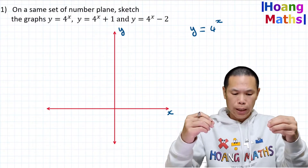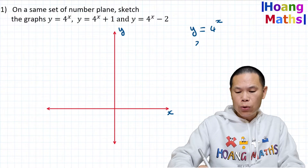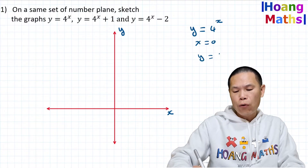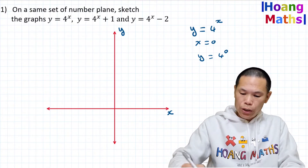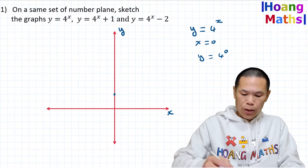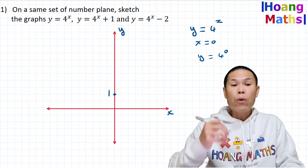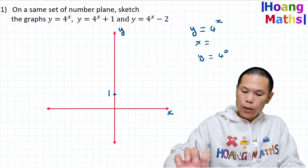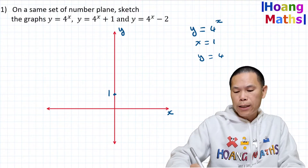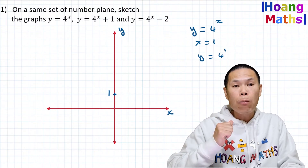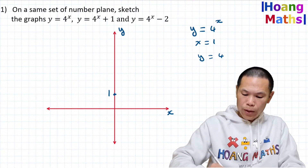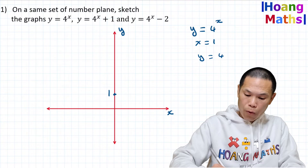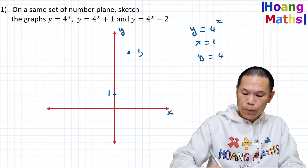When x = 0, y = 4^0. Any number to the power of zero is 1, so the point (0, 1) is here. When x = 1, y = 4^1 = 4, so the point (1, 4) is here — just a rough sketch.